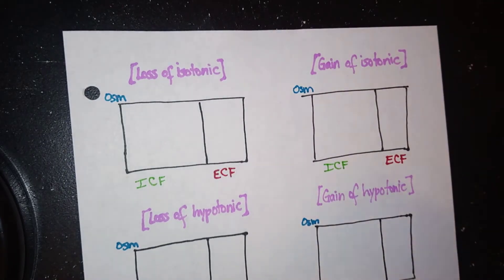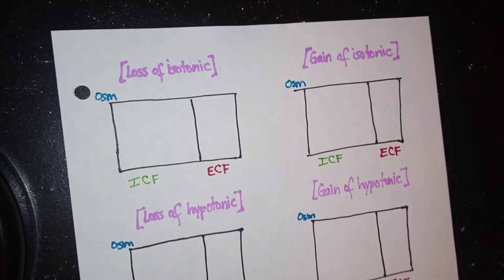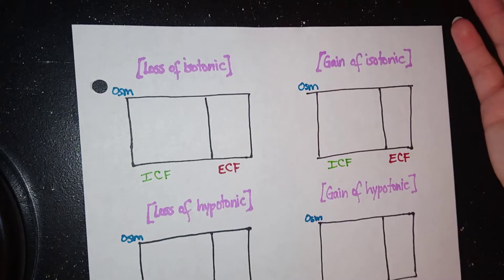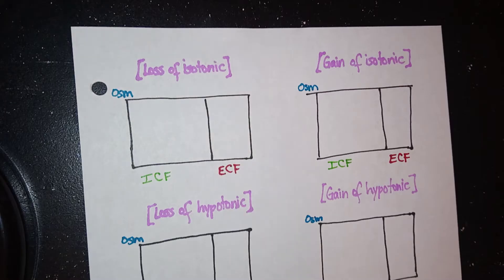So starting off, let's start with the basics, which is the case where we have isotonic fluid loss. When I say isotonic, I mean that we're going to lose about an equal amount of water and, let's say in this case, salt. An example of this would be in the case of diarrhea, vomiting, or hemorrhage, in which you are losing both amounts of solutes and water.